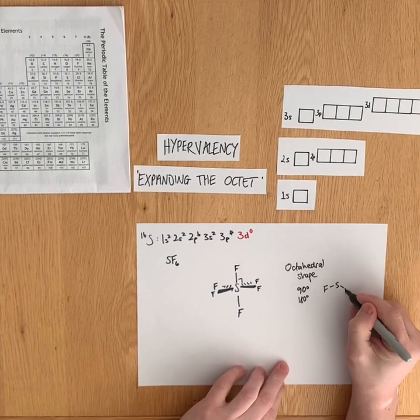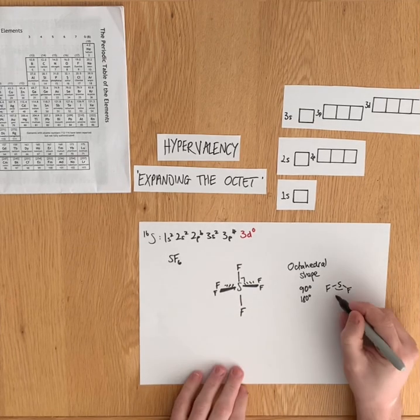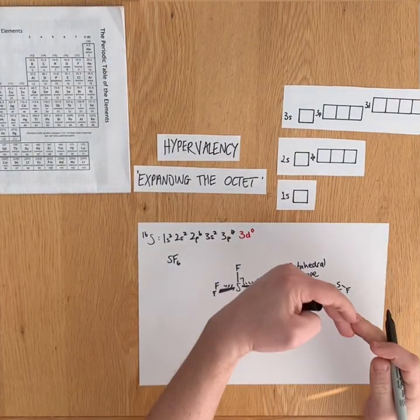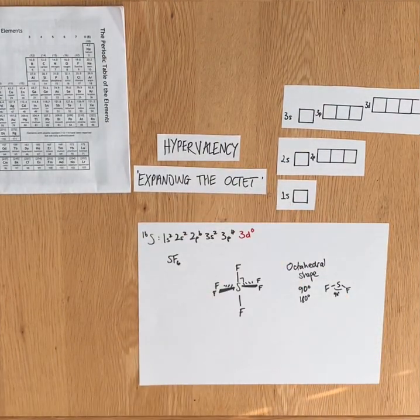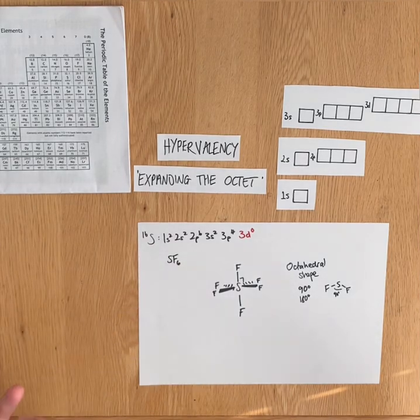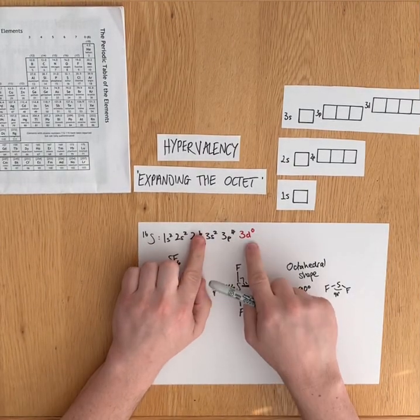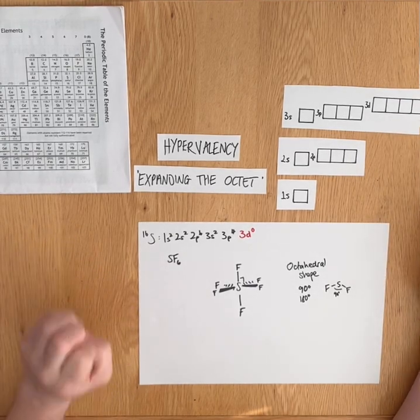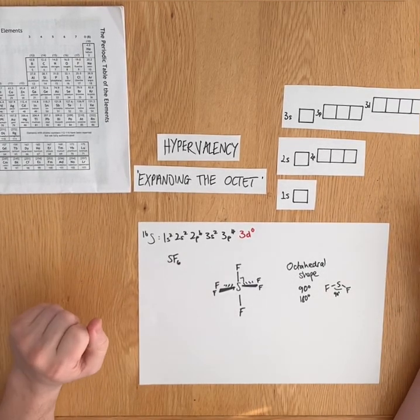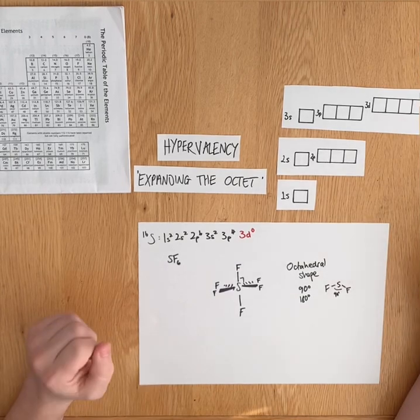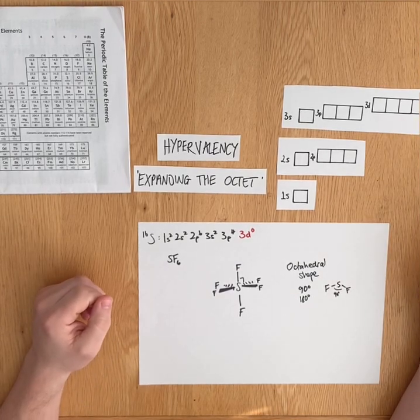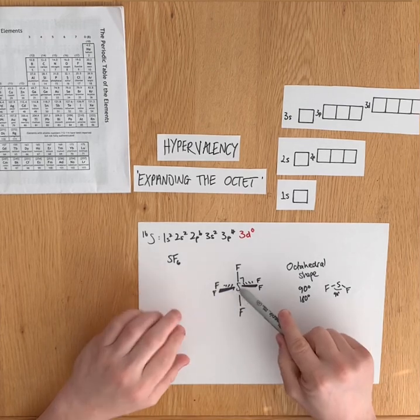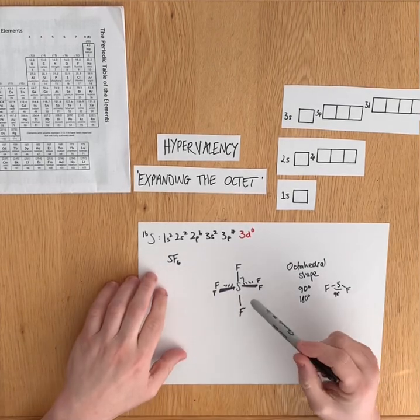For the F-S-F bond angles, they're all 90 degrees, or 180 if they're opposite. So sulfur has six electrons in its outer shell because it's got this empty 3d orbital. It can expand its octet; it can reach hypervalency. It can react in order to make a substance with more than eight electrons in its outer shell. So this here has got 12 electrons in its outer shell.